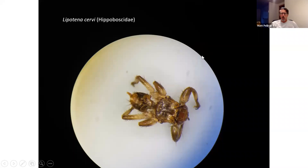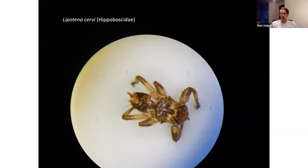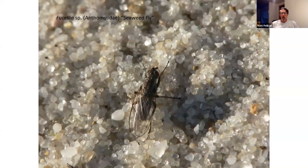Just an example of how bizarre flies can be in their structure — this one, a Lipoptena, is called a deer ked. We're looking down on the insect through a microscope, and you can see these little stubs of wings; the wings have actually broken off. The insect has very pronounced clasping claws. They basically live their entire lives attached to a deer, hanging under the hairs with those claws, sucking blood, mating, and laying eggs. The larvae drop to the ground and, if lucky, find another deer to crawl up on. The wings break off because there's no point in having them when you're riding around on a deer.